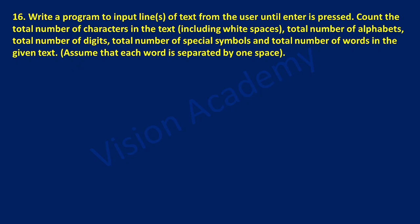Hello and welcome to Vision Academy. In this video we are going to study lab program 16. Write a program to input line or lines of text from the user until enter is pressed. Count the total number of characters in the text including white spaces, total number of alphabets, total number of digits, total number of special symbols and total number of words in the given text. Assume that each word is separated by one space.